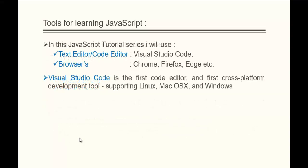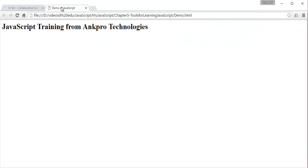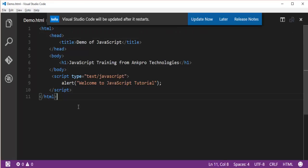In this JavaScript video series, I am going to use Visual Studio Code as the text editor or code editor, and the browsers — Chrome, Firefox, or Edge — based on the scenarios. Visual Studio Code is the first cross-platform development tool, supporting Linux, Mac, and Windows. Here is my Visual Studio Code with the code copied earlier. Running it in the browser gives us the same output: 'Welcome to JavaScript Tutorial.'